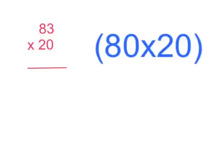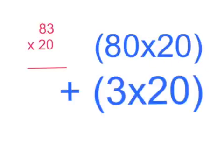For the first step of the distributive property of multiplication, you have to get the 83 and break it down into 80. So then you will have 80 times 20. Then you have to take the 3 from 83 and times the 3 by 20.